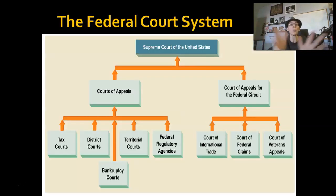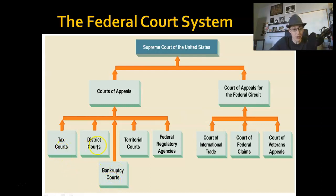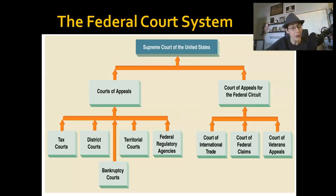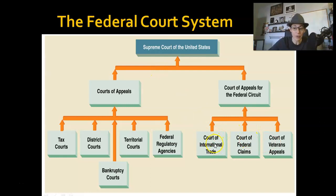Here I wanted to show you a visual breakdown of how the court system interacts. You see some additional kinds of courts here as well — bankruptcy courts, tax courts, district courts, territorial courts, federal regulatory agencies — all of these start here, and then they would go to the Court of Appeals. If anybody doesn't like the ruling, they can do what's called an appeal and ask a higher court to evaluate the ruling and see if they might overturn it or agree with it. From the Court of Appeals, the only stop left is the Supreme Court. With the Court of International Trade, federal claims, and veterans appeals, you have the Court of Appeals for the Federal Circuit, and then from there you would go to the U.S. Supreme Court.